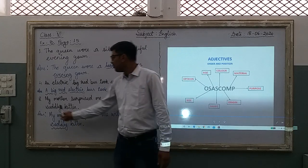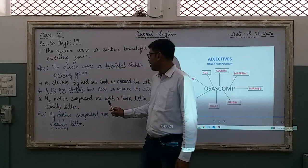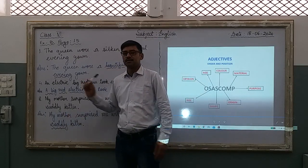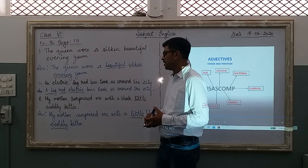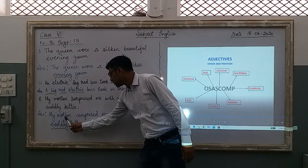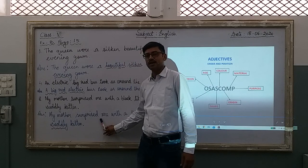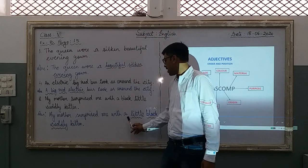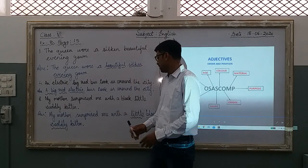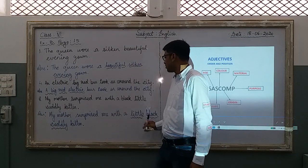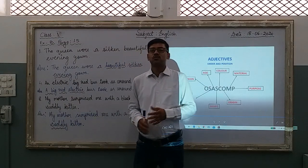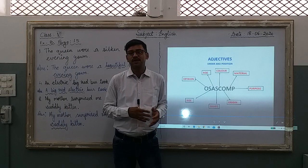Sentence number eight: 'My mother surprised me with a black little cuddly kitten.' Let us check the sequence — 'little' is size, and in the OSASCOMP sequence size comes before color. So the correct form is: 'My mother surprised me with a little black cuddly kitten.'